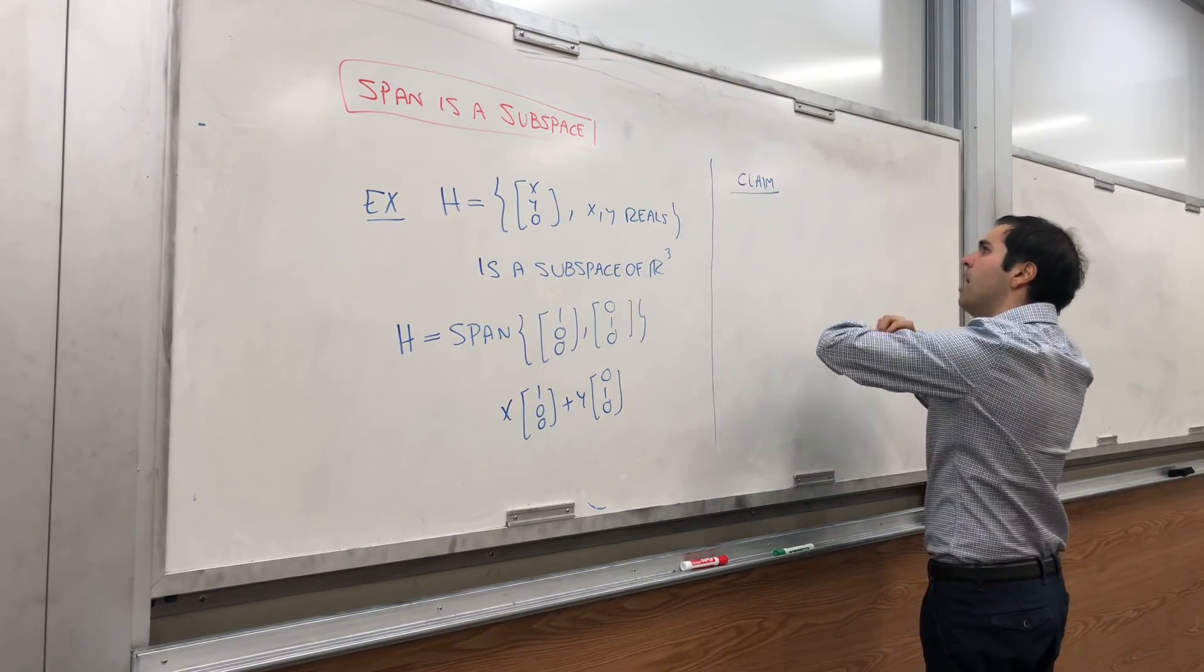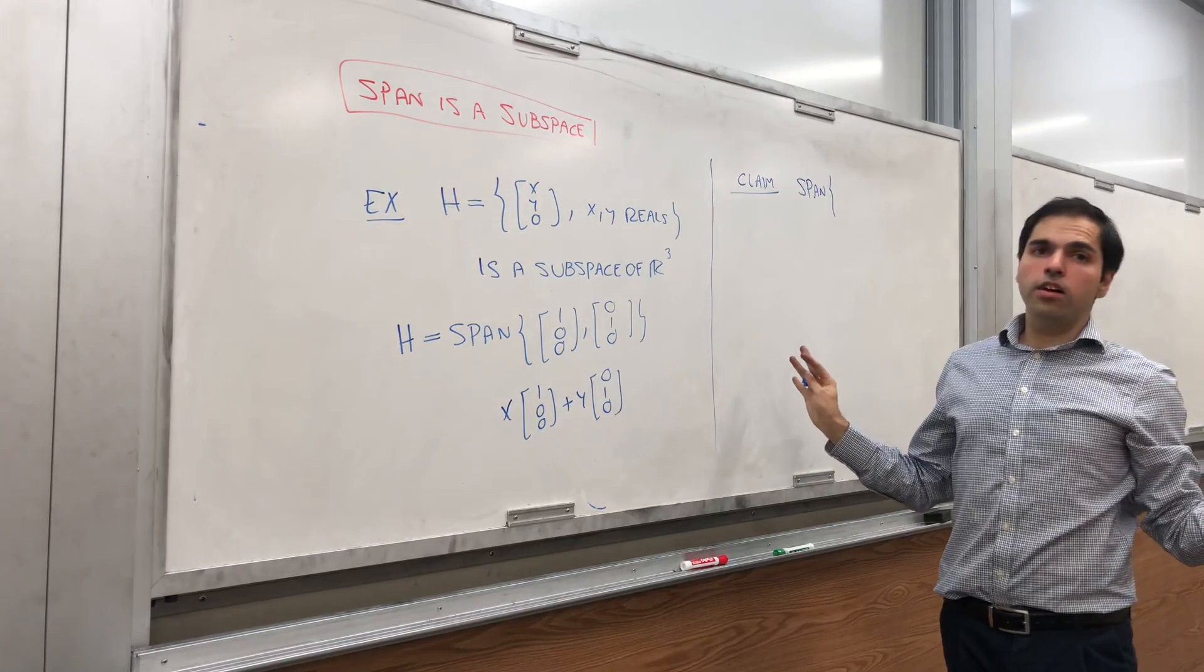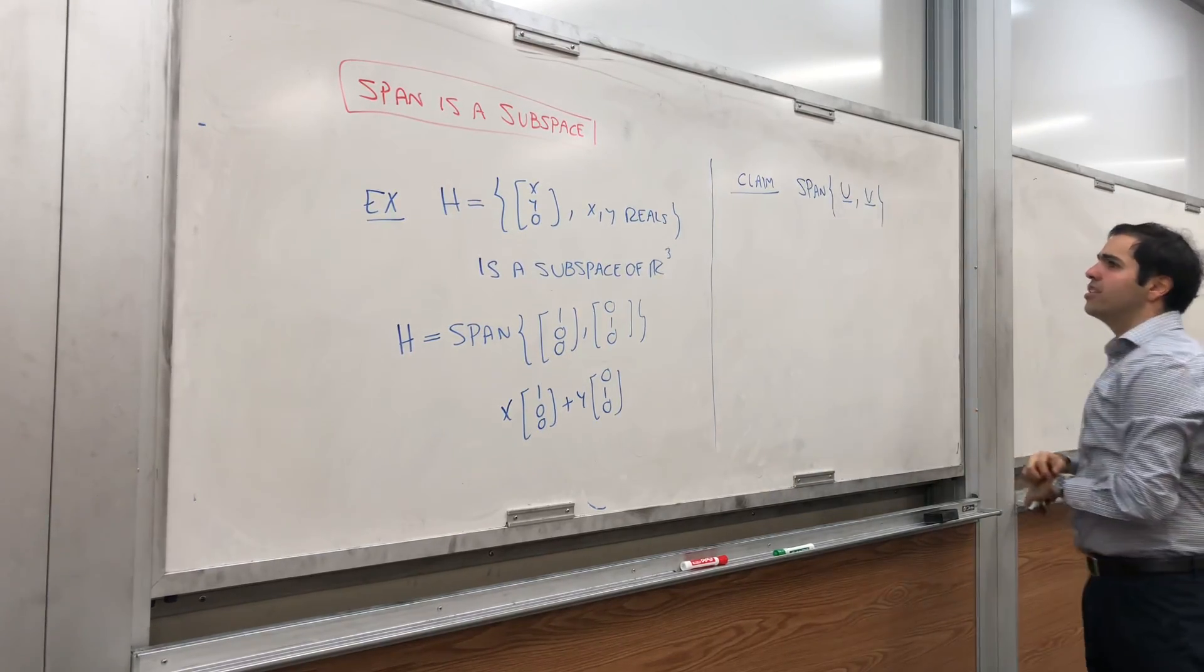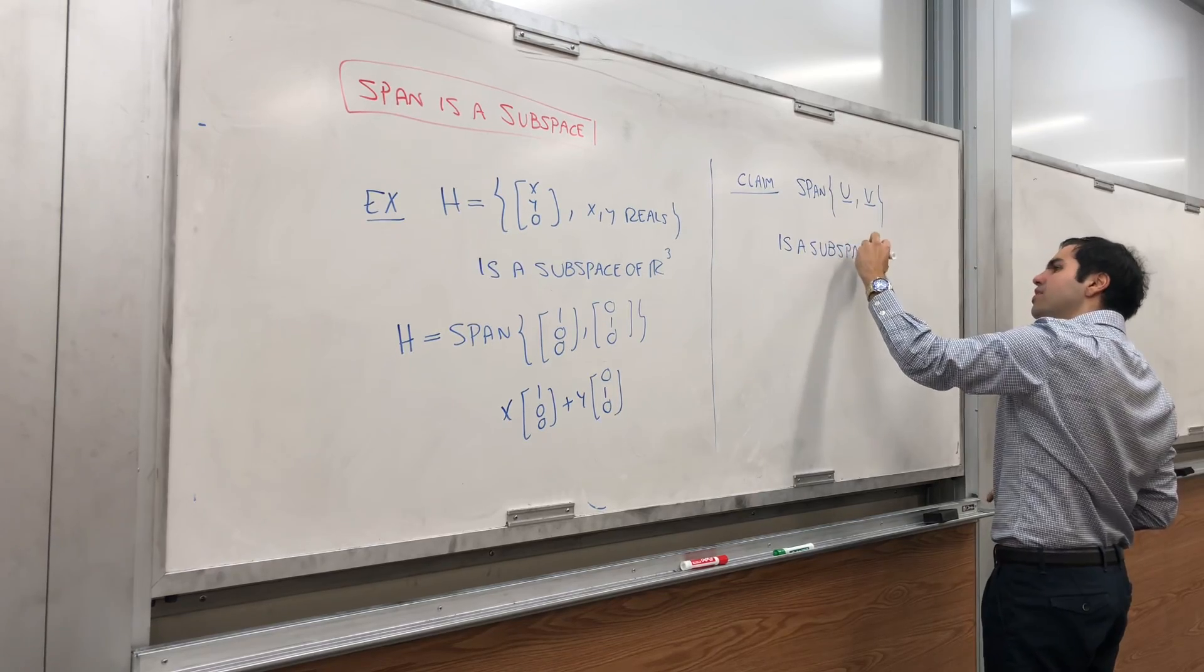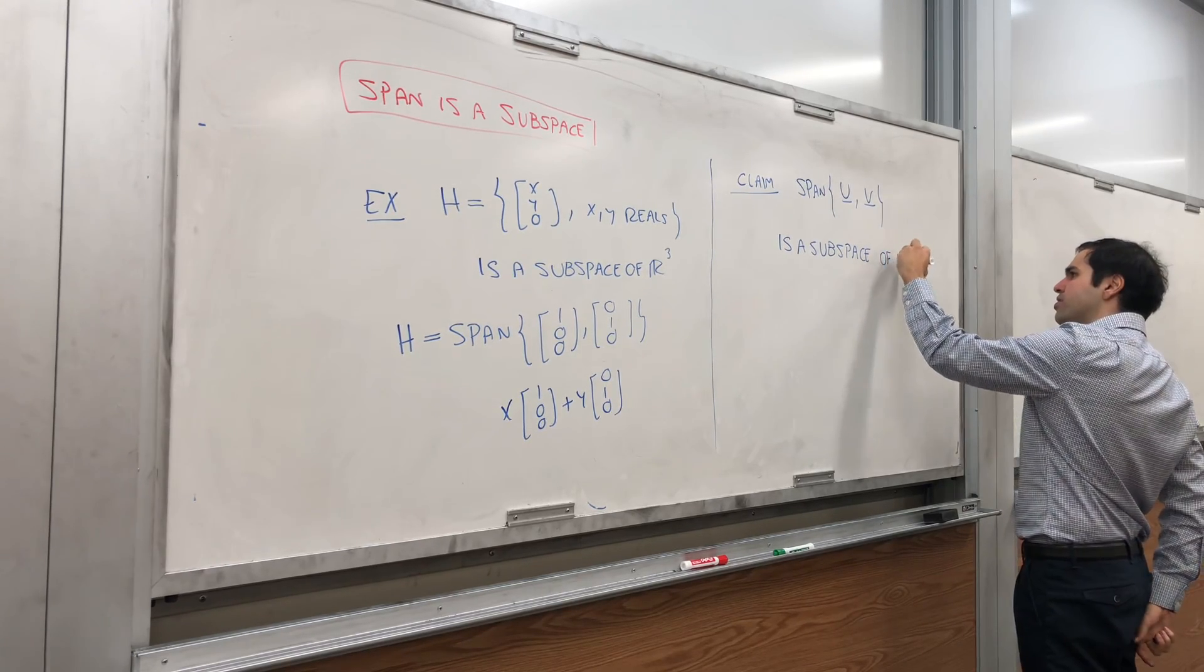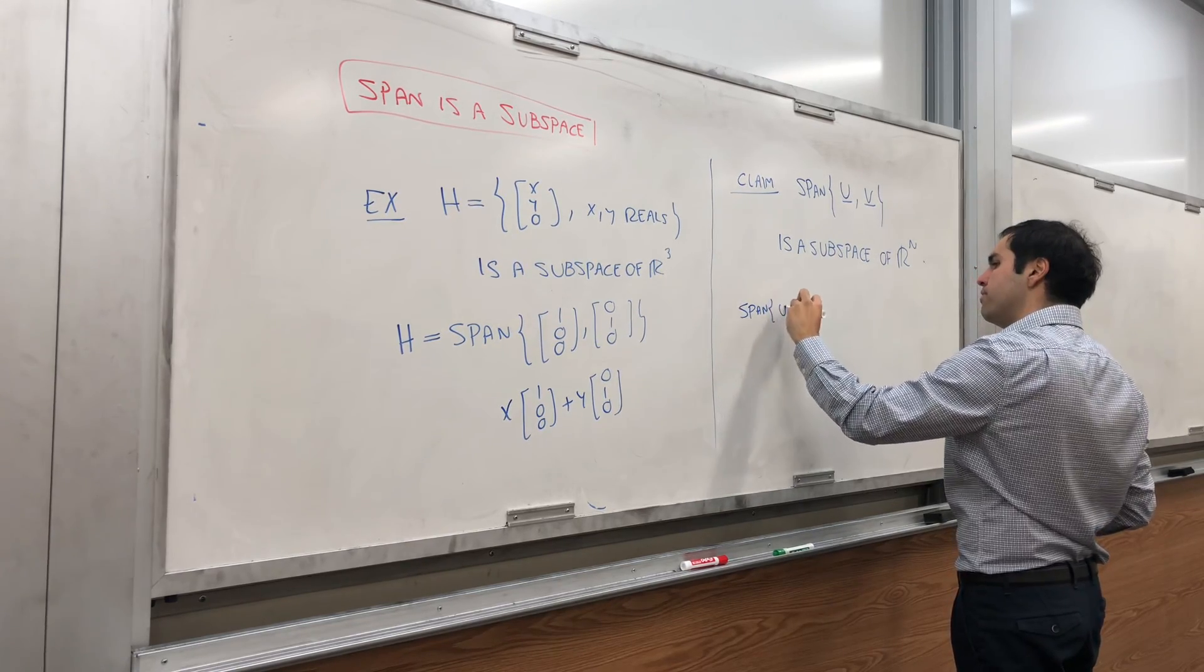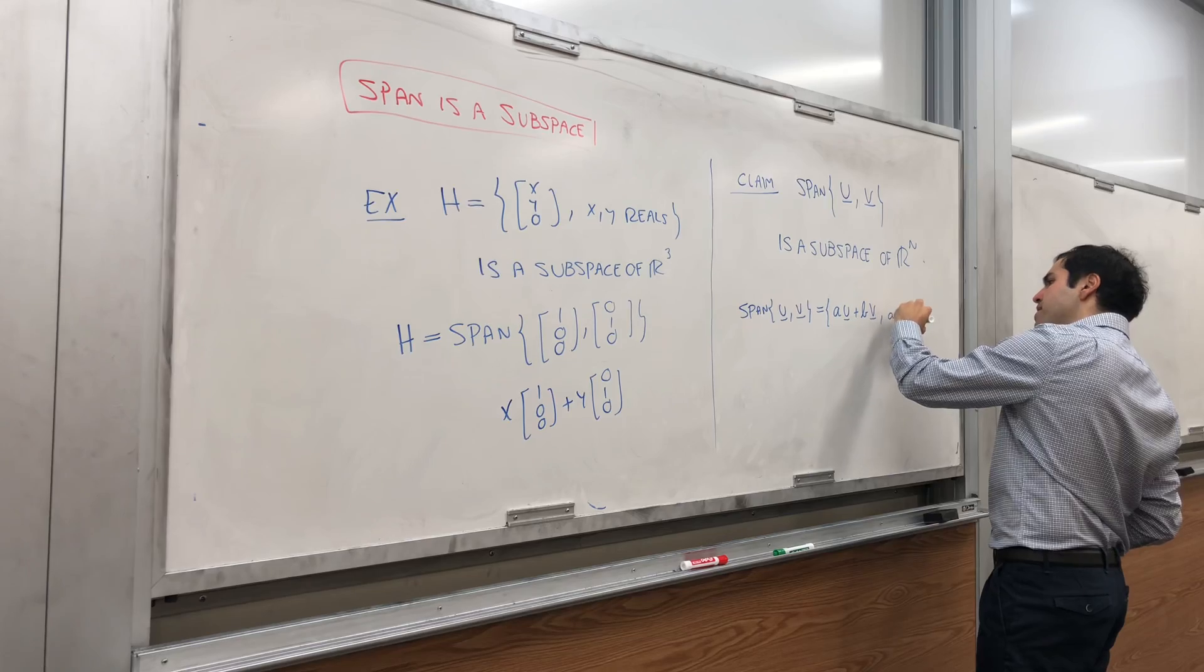So claim: span, this works for any number of vectors, finite or even infinite. But let me just show you for two vectors, just to keep the exposition a bit easier. So let me claim that span of u,v is a subspace. And again, this works for abstract subspaces as well, but let's just for concreteness say for Rn, provided u and v are in Rn. And again, span is just a set of linear combinations of u and v. So set of expressions of the form au plus bv, where ab are reals.